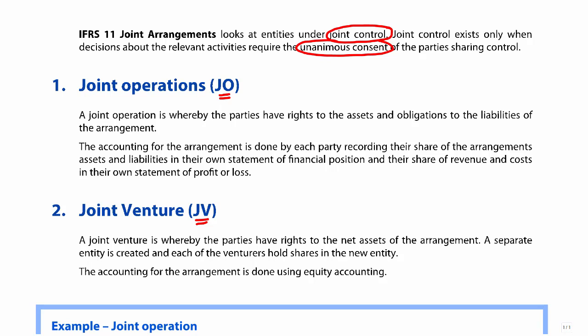A joint operation tends to be like what we see with airline companies and how they tend to operate. Say two airlines come together — maybe one a European airline and one an American airline. A passenger will book a ticket from a European destination to somewhere in America. The European airline flies them from Europe to America, then the passenger boards another plane in America and flies to their specific destination on an American plane. What you have there is a joint operation because the European company owns the European plane and the American company owns the American plane. So two companies have come together to form a joint operation. And in a joint operation, there is no separate entity that is set up.